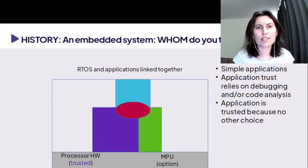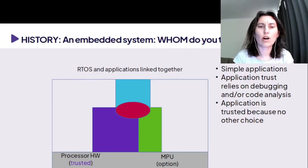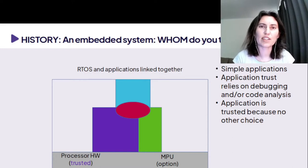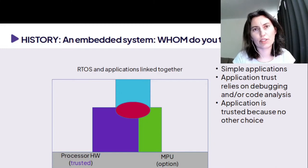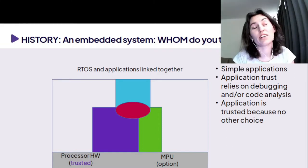This typical embedded system is running simple applications and our trust in the whole product depends on heavy debugging, finding out in practice that the solution is working correctly, and analysis of the source code. In addition, we trust it just because we really do not have an added choice.